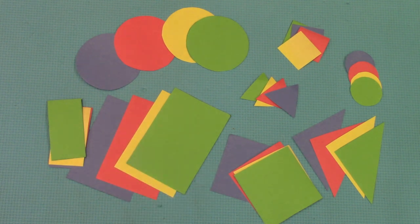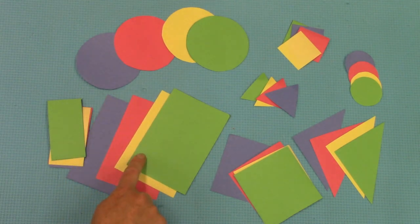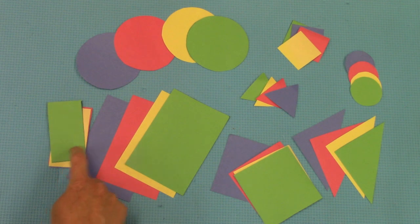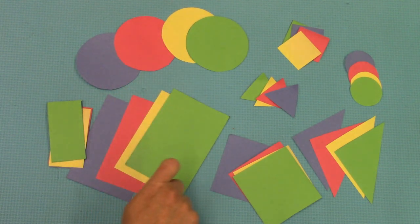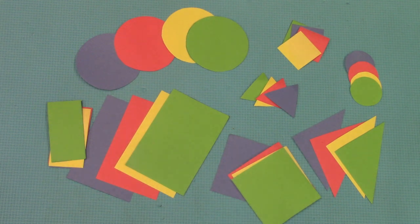Well, what different shapes do we have? We have circles and rectangles and squares and triangles. So we have one, two, three, four colors and one, two, three, four shapes.